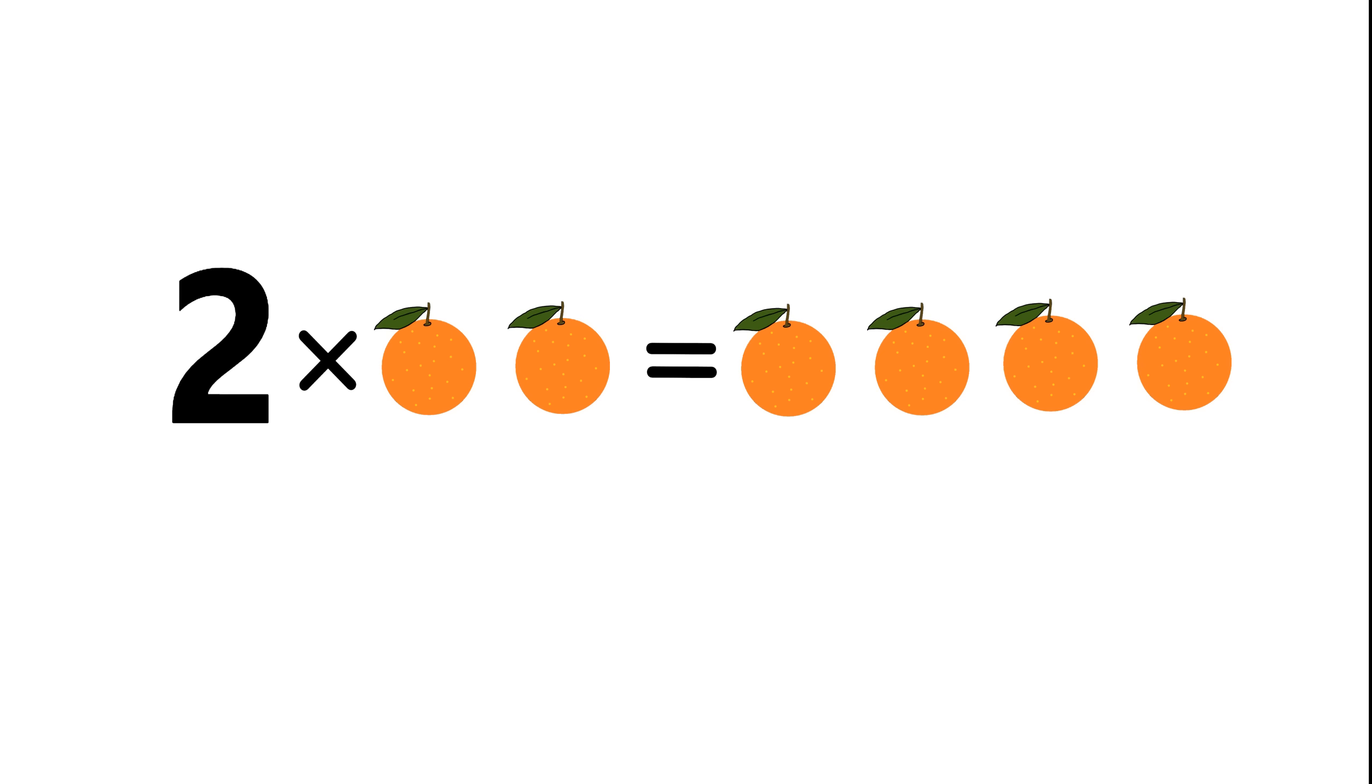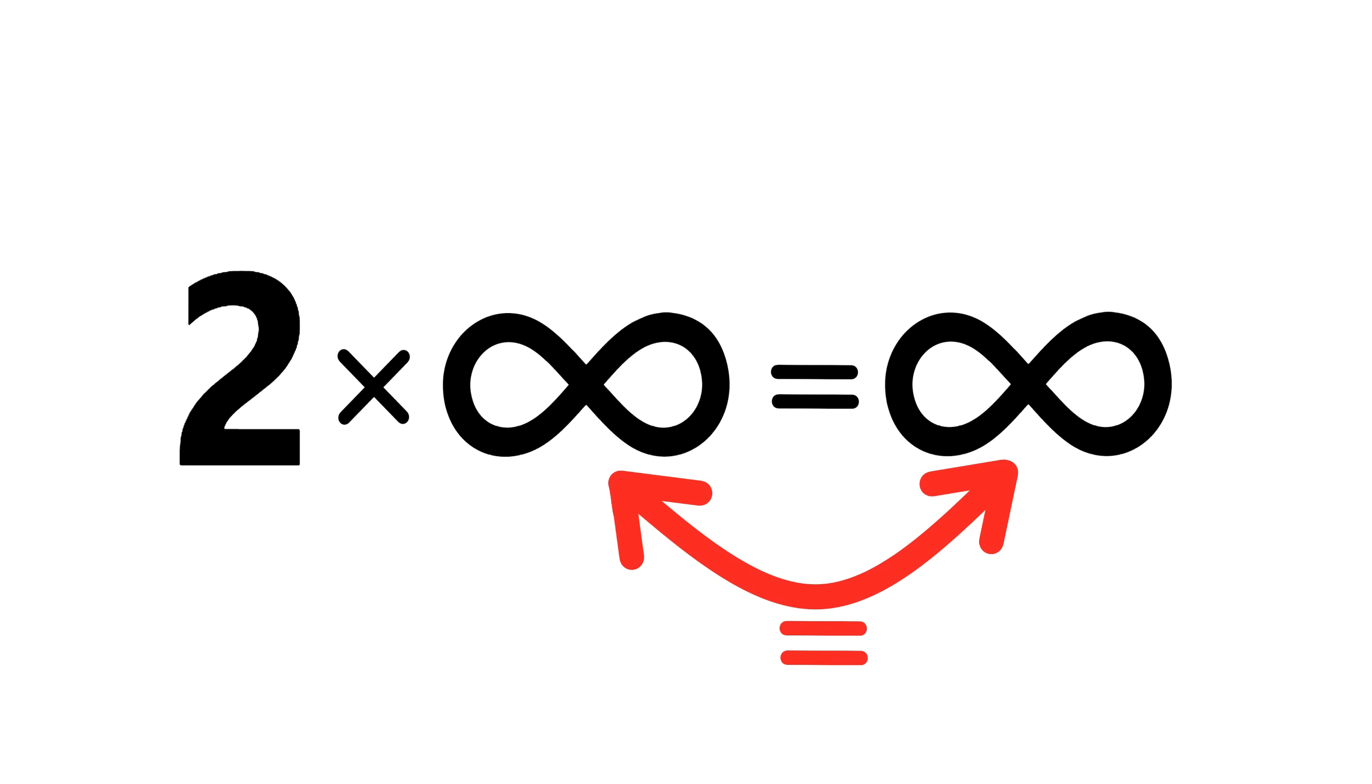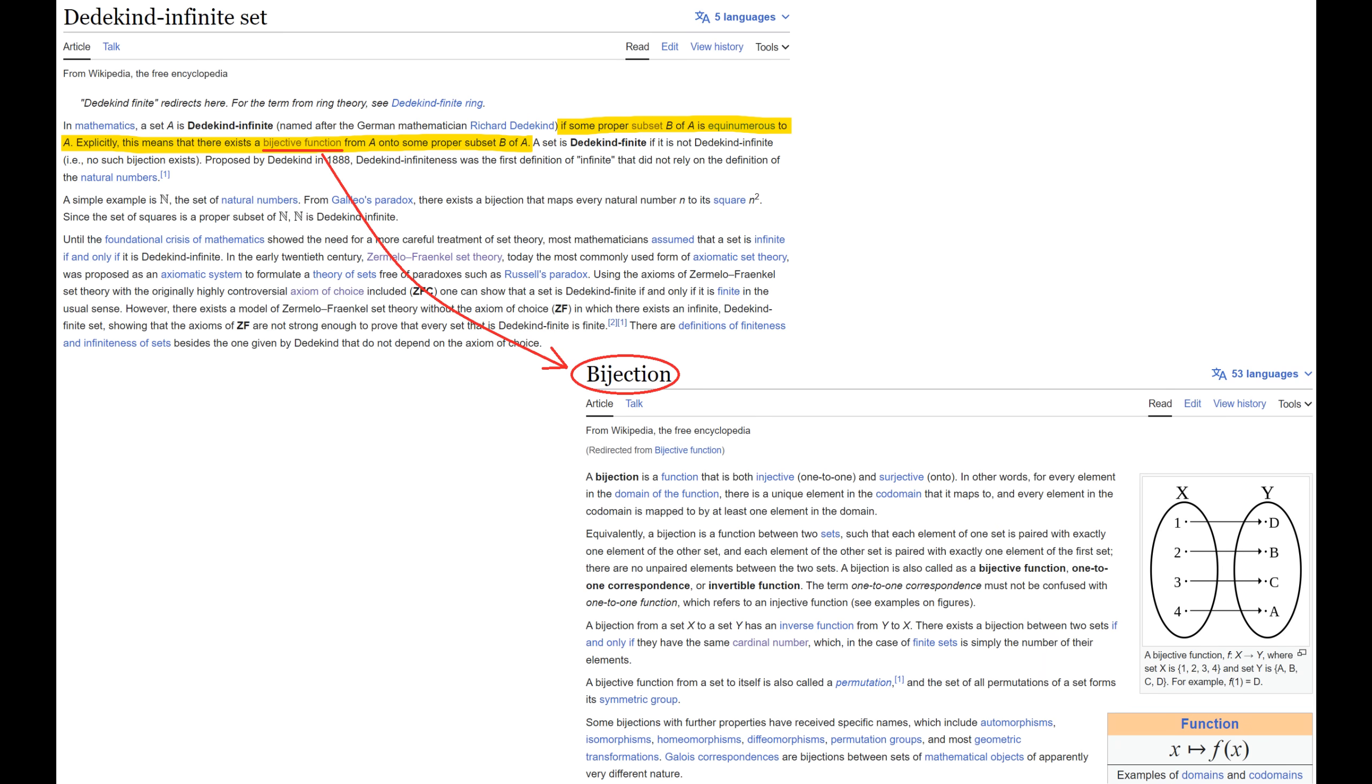So what I'm going to do here is explain how doubling infinity gives you an infinity that is exactly the same size as the original. Not sort of the same size or vaguely the same size, but the exact same mathematical size. There are mathematical proofs for this, but I'm going to give you an intuitive argument here so that hopefully you can understand in your gut why this is true.